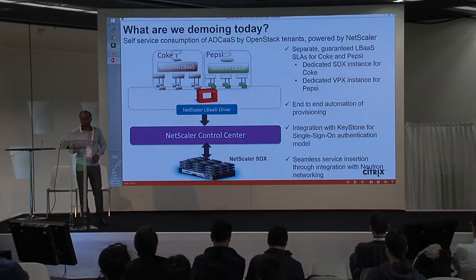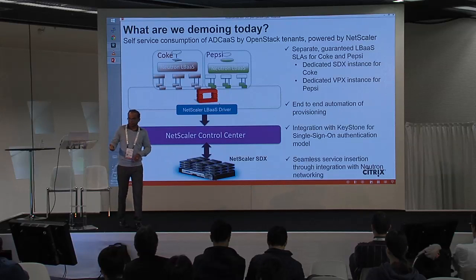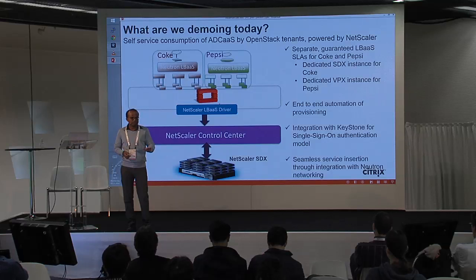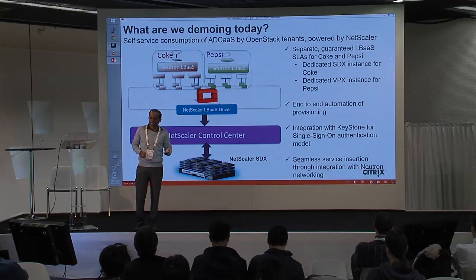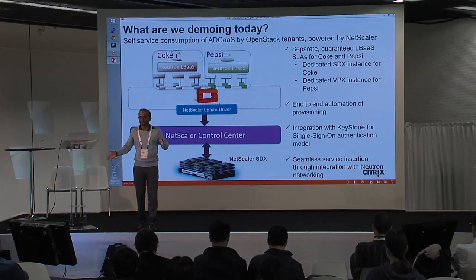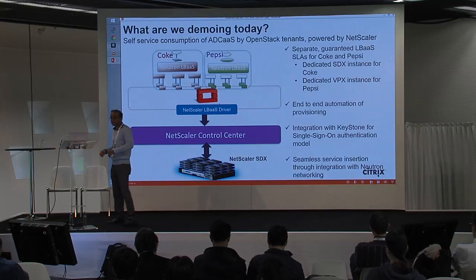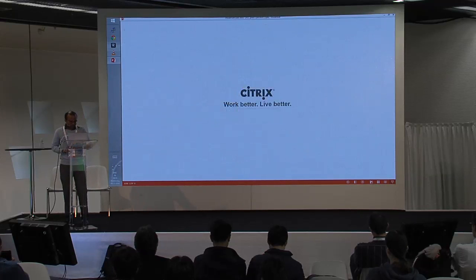So let's go ahead and do a demo of what I just spoke about. We'll show you two tenants — Coke and Pepsi. Coke has been guaranteed the gold service package and Pepsi has been guaranteed a silver service package. The gold service package consists of a dedicated SDX instance and the silver service package consists of a dedicated VPX instance. We'll see how this entire process is automated behind the scenes.